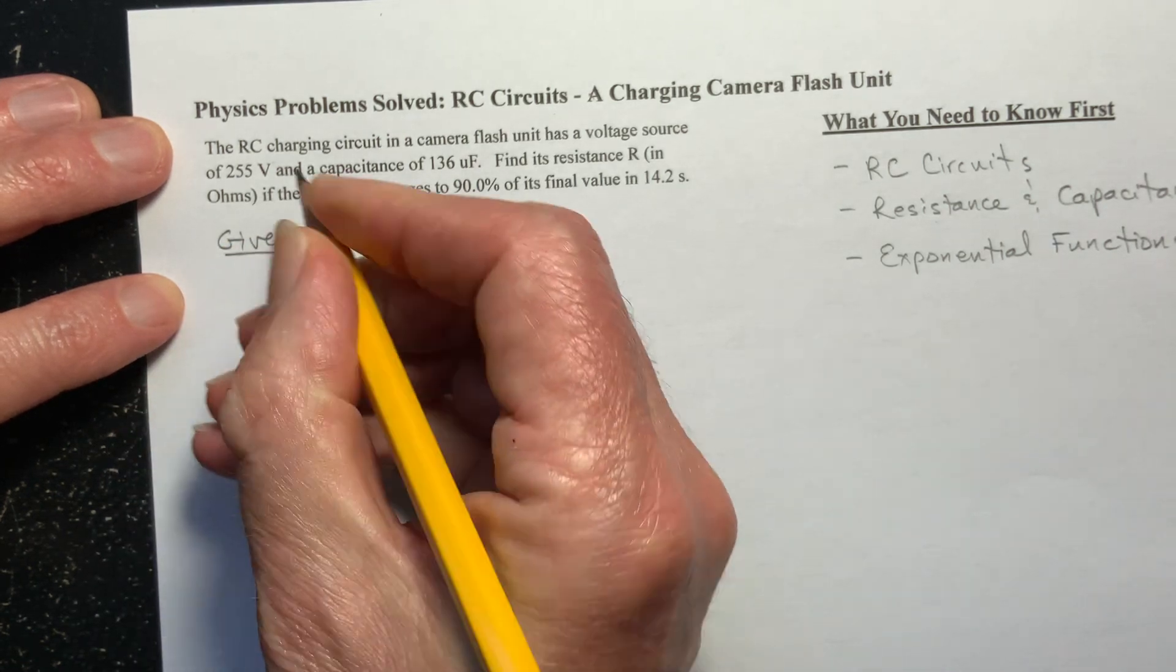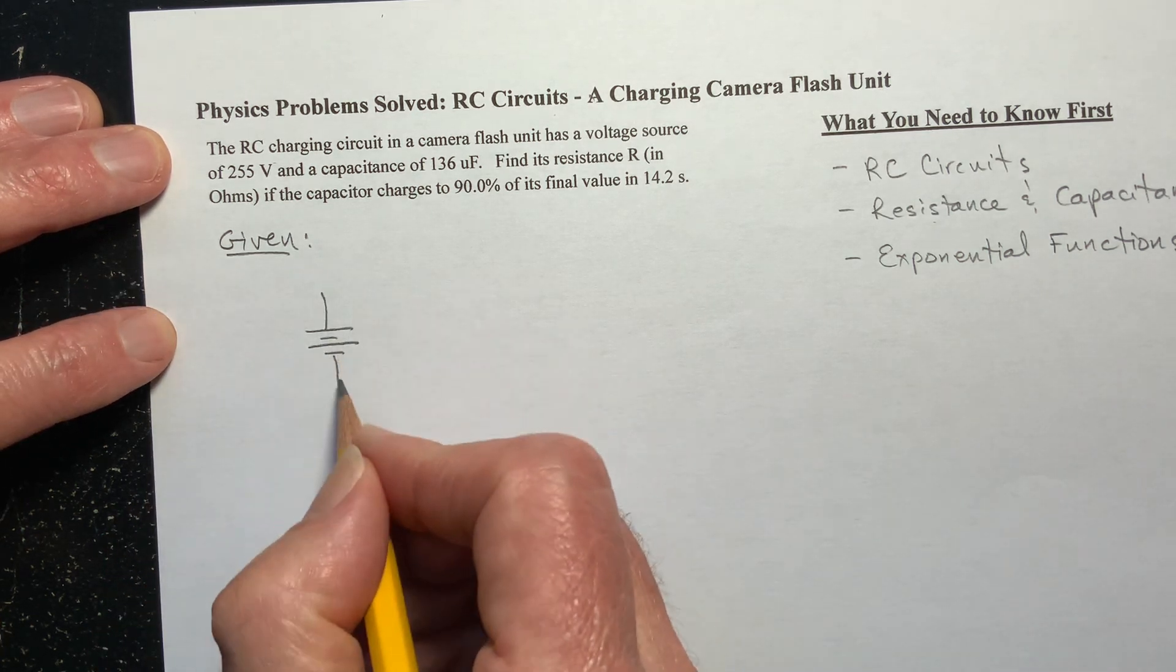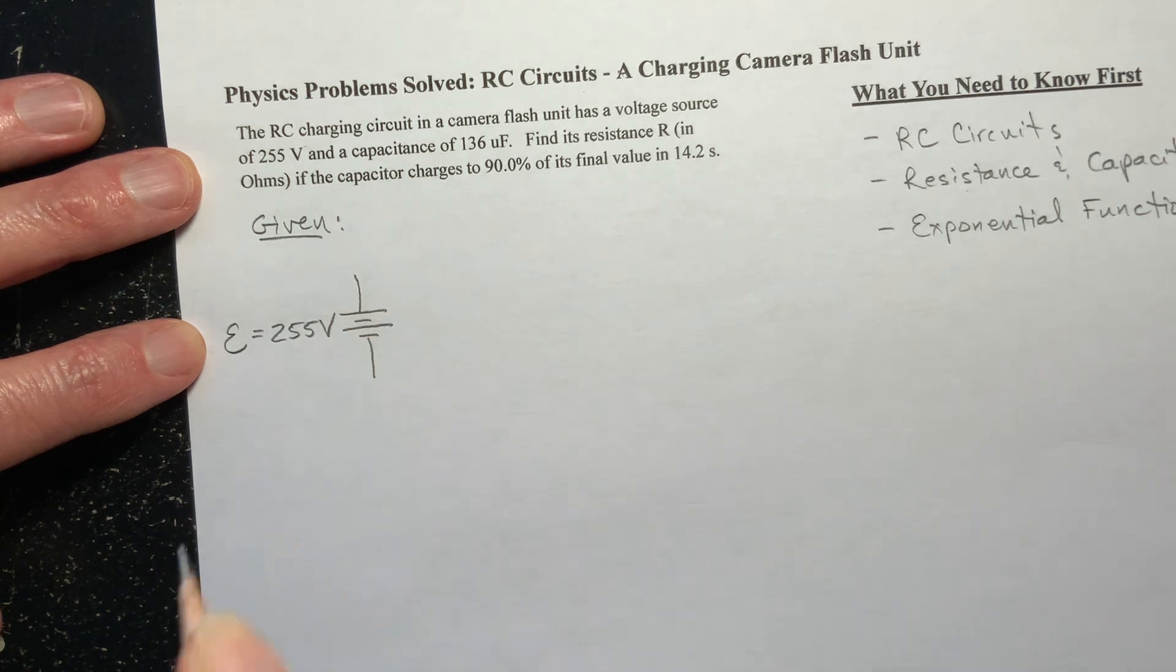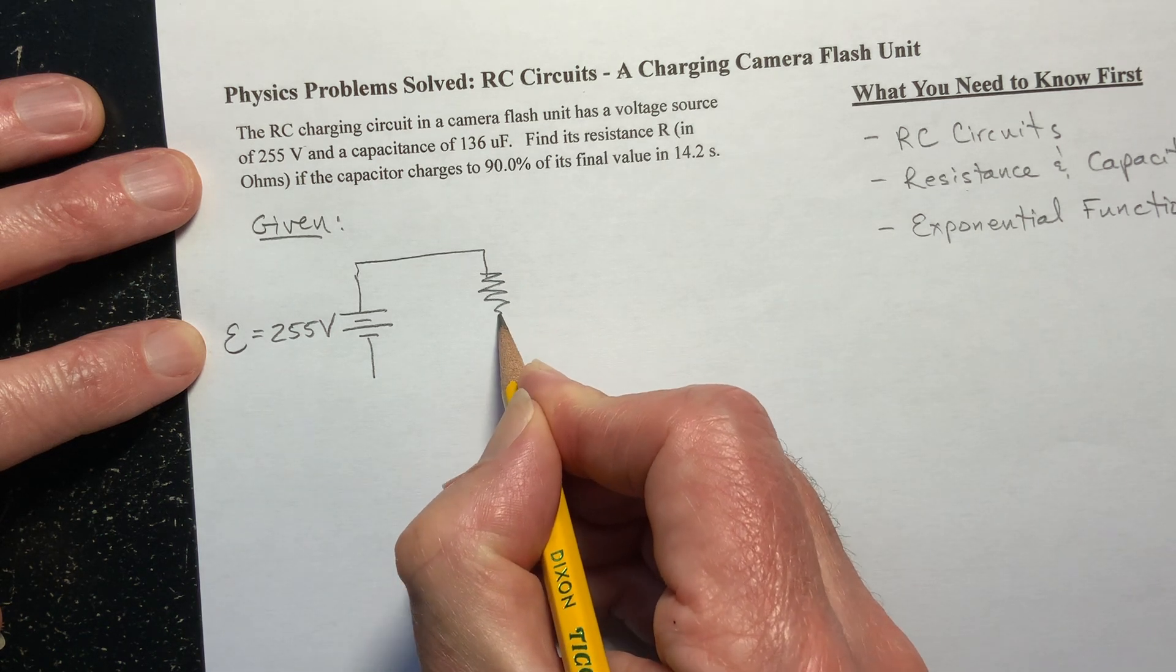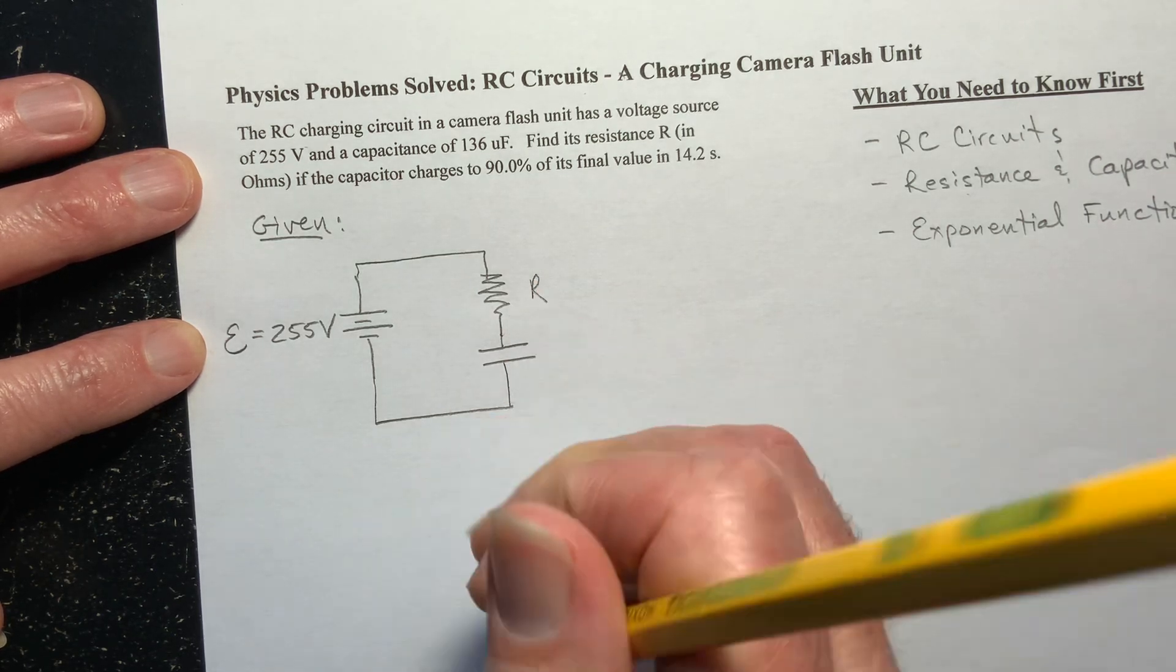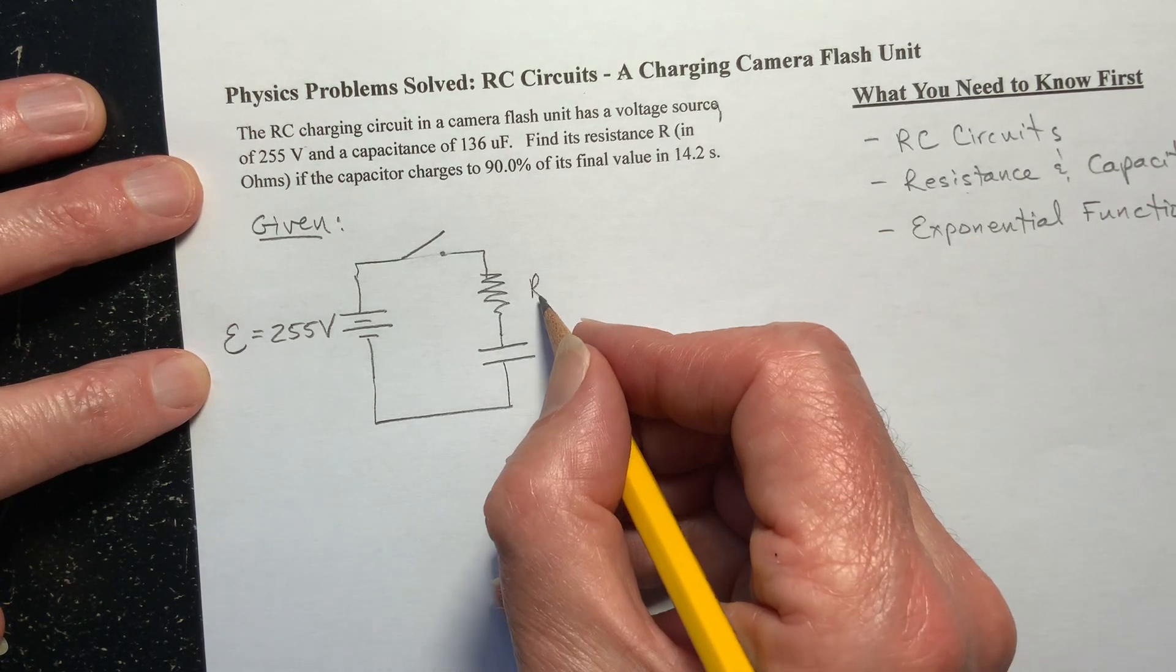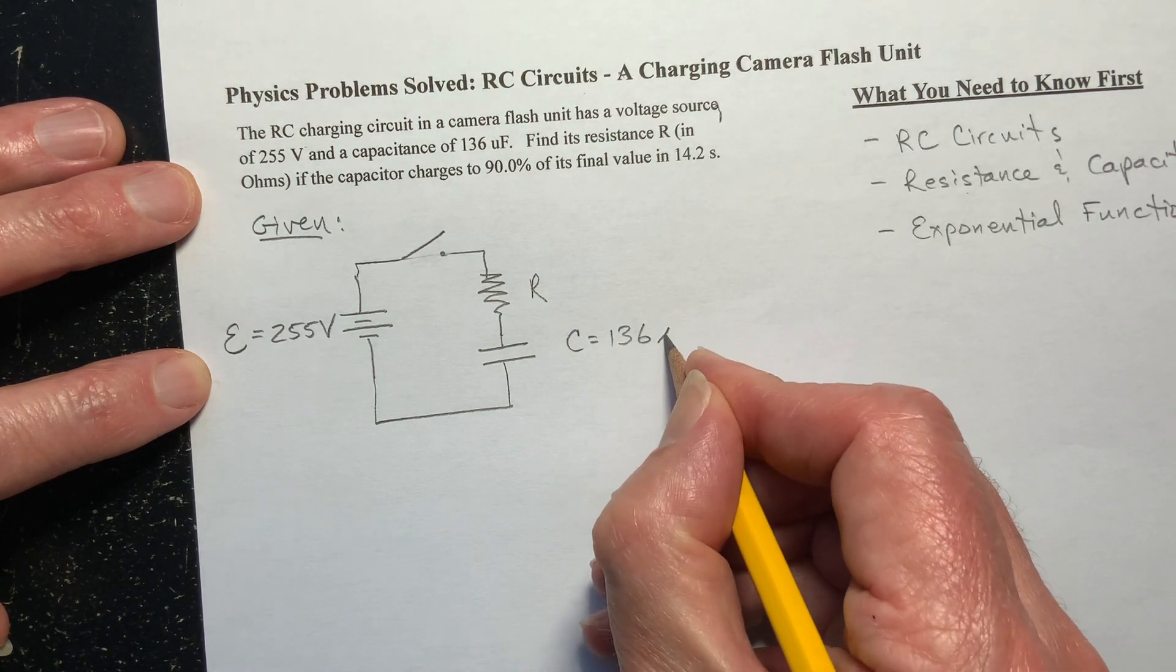All right, let's get started. So given, it's a simple RC circuit. Here's our voltage source. The EMF of the battery - it's probably a battery of some kind, and I'm going to use the cursive E to represent that - is 255 volts. Then there's going to be a resistor, and there's going to be a capacitor. And there's going to be a switch in here. We've got to have a switch. We're given the capacitance is equal to 136 microfarads.